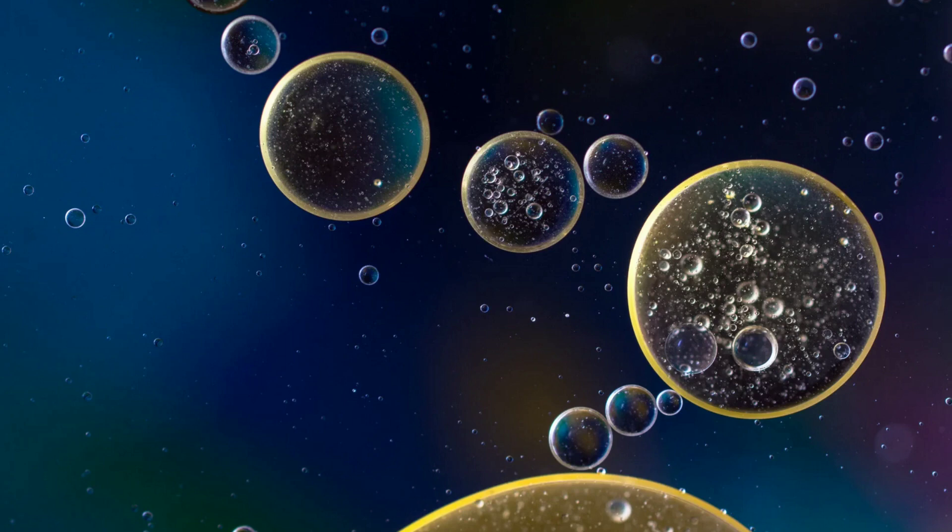First, occluding junctions. Second, adherens junctions which include cell-to-cell - that is, adherens junction desmosomes - and cell-to-matrix focal adhesions and hemidesmosomes. Third one is communicating junctions.